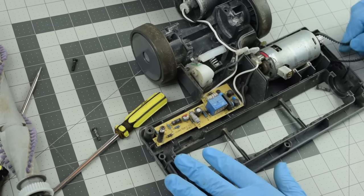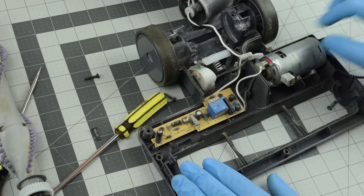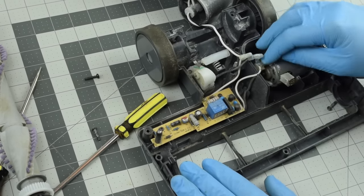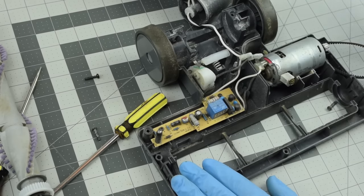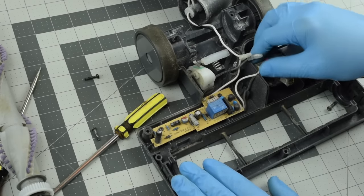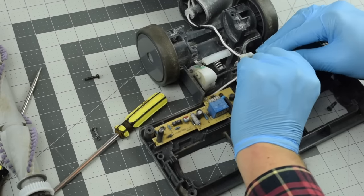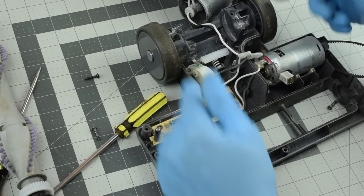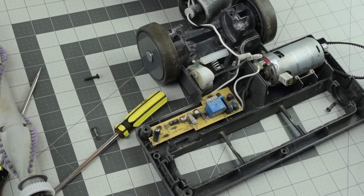Everything else is pretty self-explanatory. These motors have very easy connectors. So if you had to get a spare part or whatever, it should be pretty easy to replace. These wheels pop off pretty easy as well.